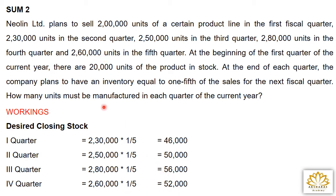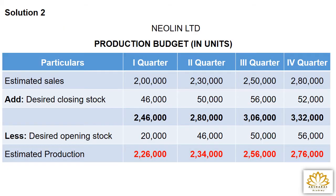Now let's work out the production budget. Heading: Neolin Limited, Production Budget in units. 5 columns: Particulars, 1st Quarter, 2nd Quarter, 3rd Quarter, 4th Quarter. Format: estimated sales plus desired closing stock gives total, then less desired opening stock. Estimated sales: 1st quarter = 2,00,000; 2nd = 2,30,000; 3rd = 2,50,000; 4th = 2,80,000.